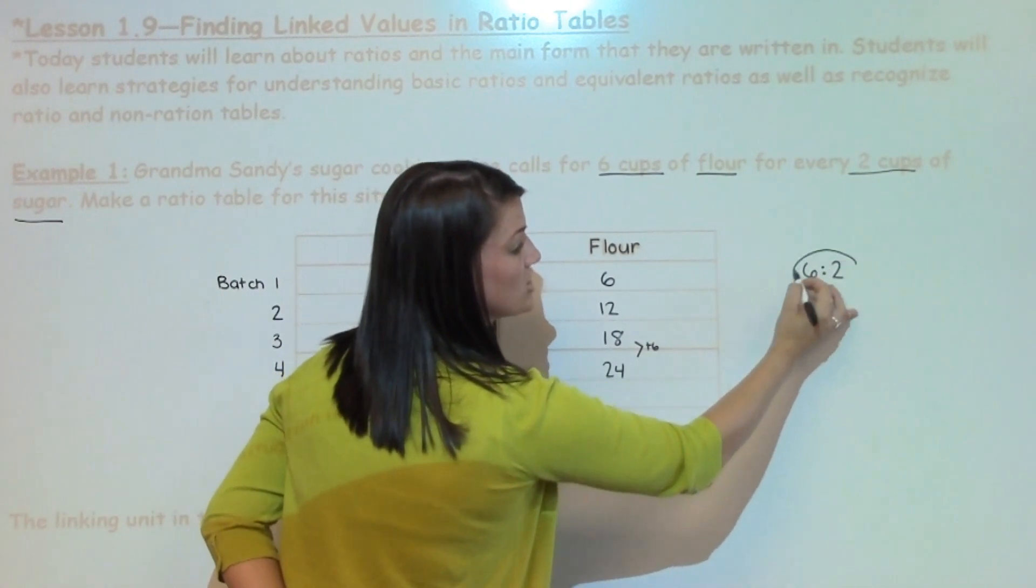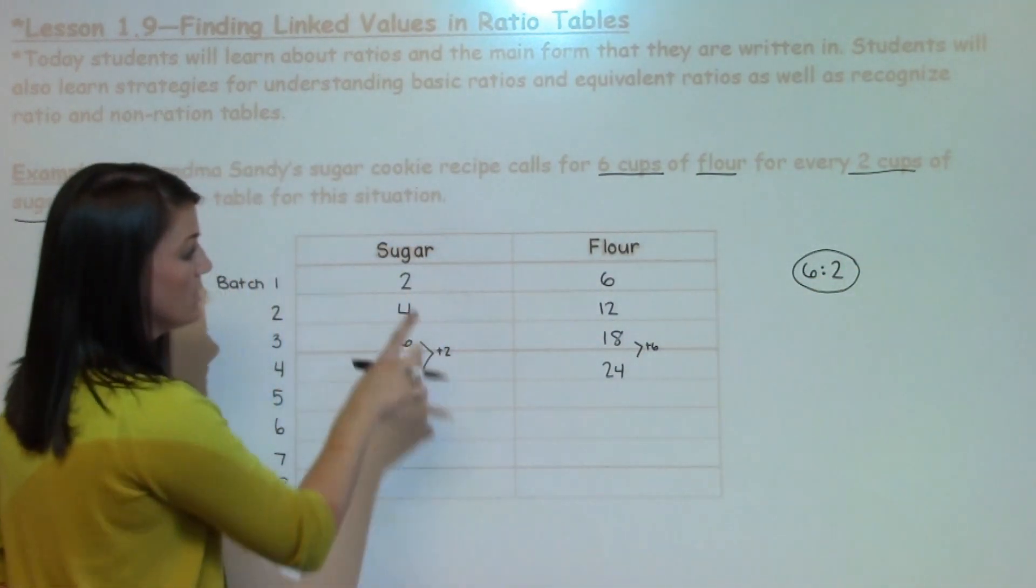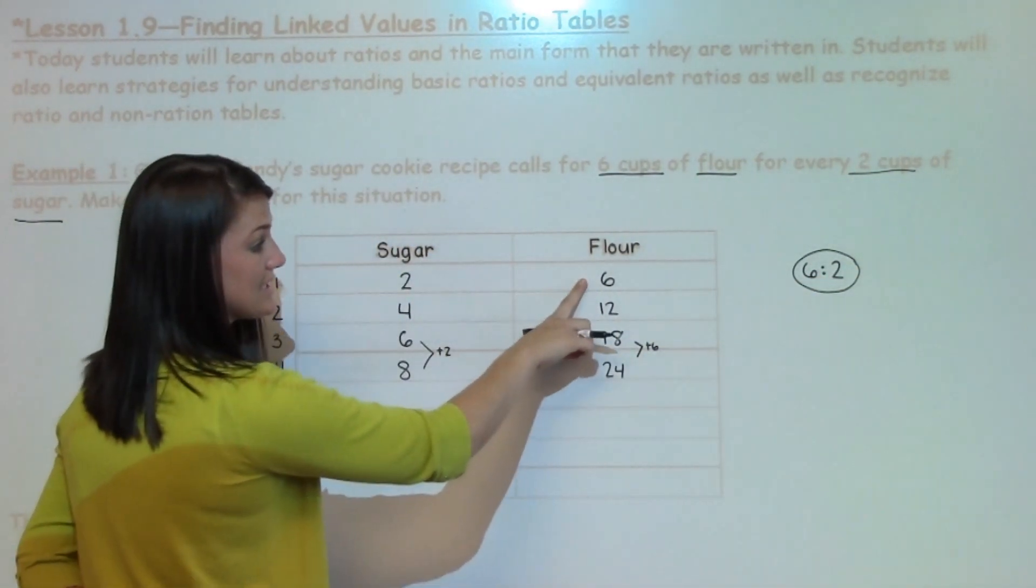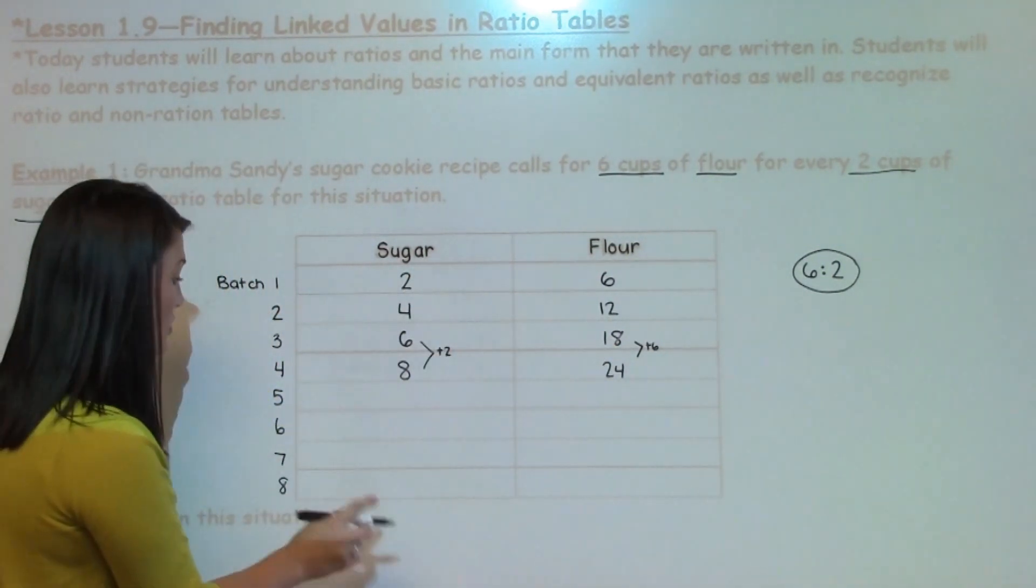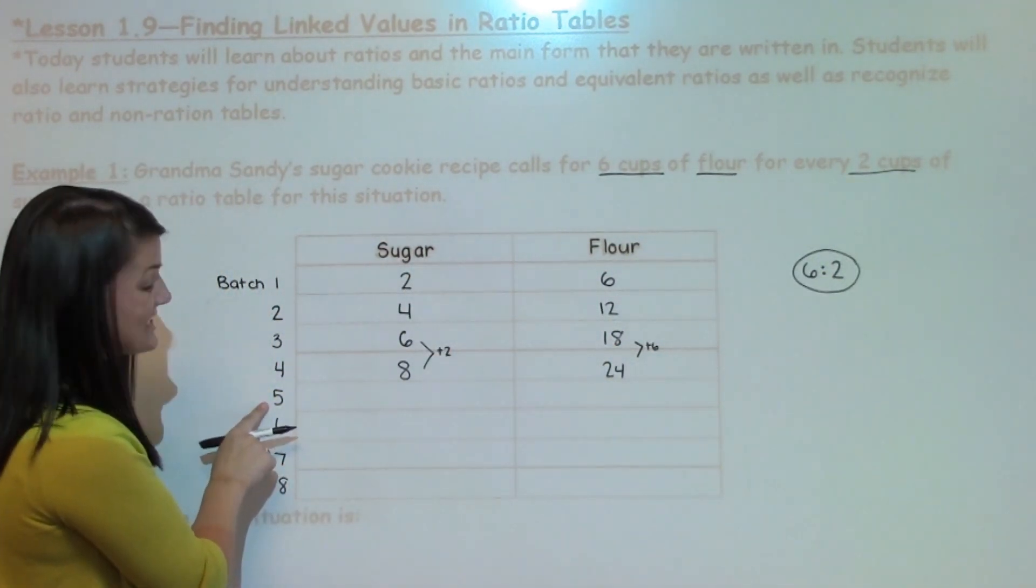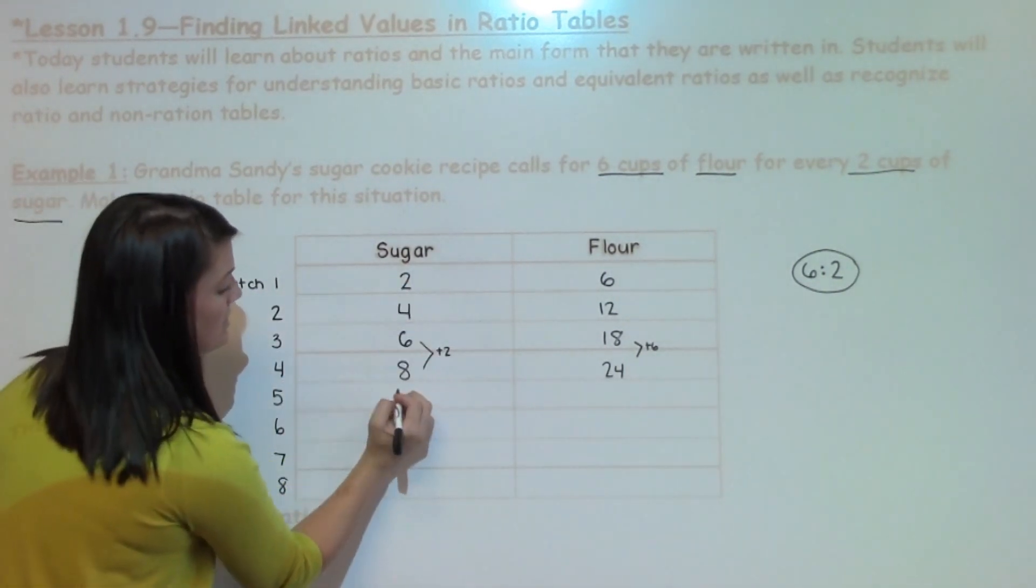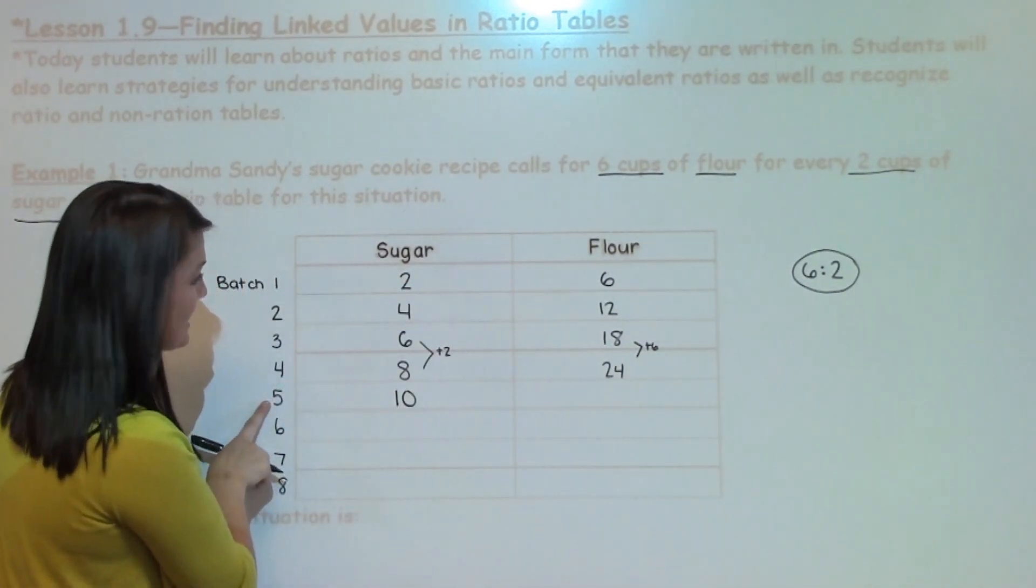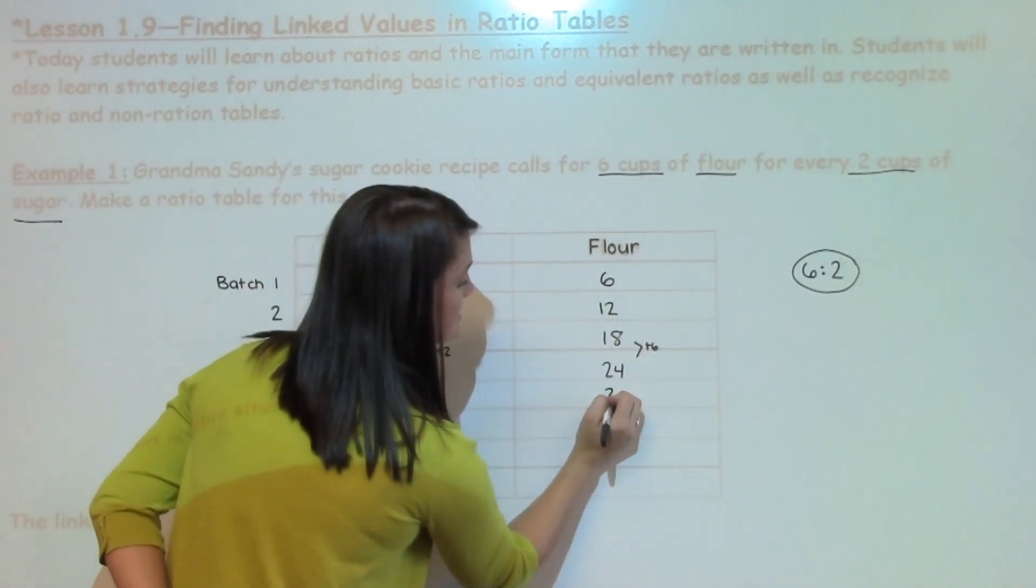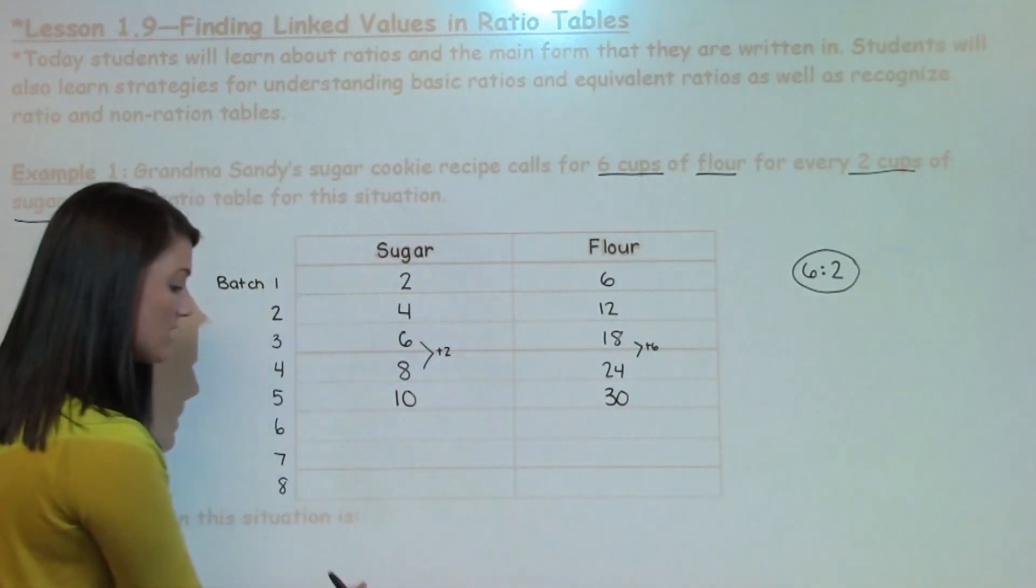Remembering that my basic ratio is 6 to 2, 2 cups of sugar to 6 cups of flour, I'm able to complete the table. I'll do one more. If I wanted to make 5 batches of cookies, I would take 5 times 2 to get 10 and 5 times 6 to get 30, and I would continue on.